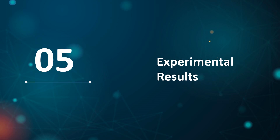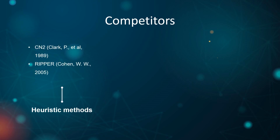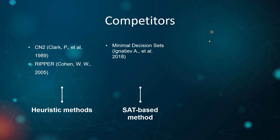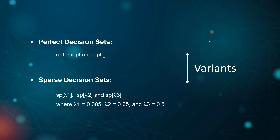Let's talk about experimental results. To assess the proposed SAT-based approach, a number of state-of-the-art algorithms were considered, including the heuristic methods CN2 and RIPPER — they don't guarantee any optimality. And the closest competitor, SAT-based minimal decision sets, first optimizes the number of rules and afterward the number of literals. The MaxSAT-based approach is also considered — they minimize the number of literals given some number of rules. We are the only approach to minimize the total number of literals. Several variants of our models are considered: OPT refers to the SAT model; MOPT refers to the MaxSAT model for perfect decision sets. We also consider various values of lambda for the sparse models, some giving higher preference to accuracy, others focusing on size instead.